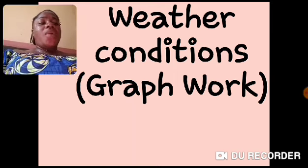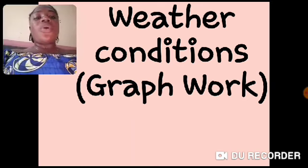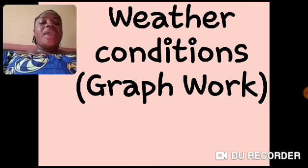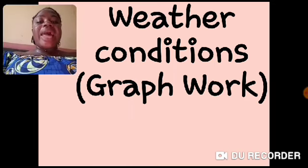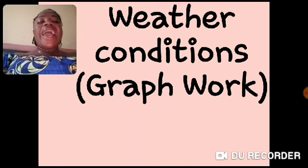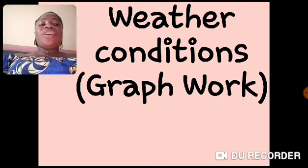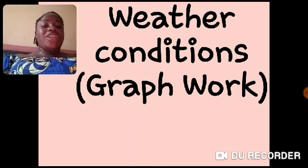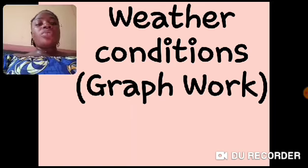So we are going to be treating something very interesting. It is about a neighbor school — a sister school. In that school, in KG2 class, students were asked to choose the weather condition they like best. And they formed groups. Those who liked rainy weather conditions grouped themselves. Those who liked sunny weather conditions grouped themselves. Those who liked windy weather conditions also grouped themselves, and those who liked cloudy weather conditions also grouped themselves.